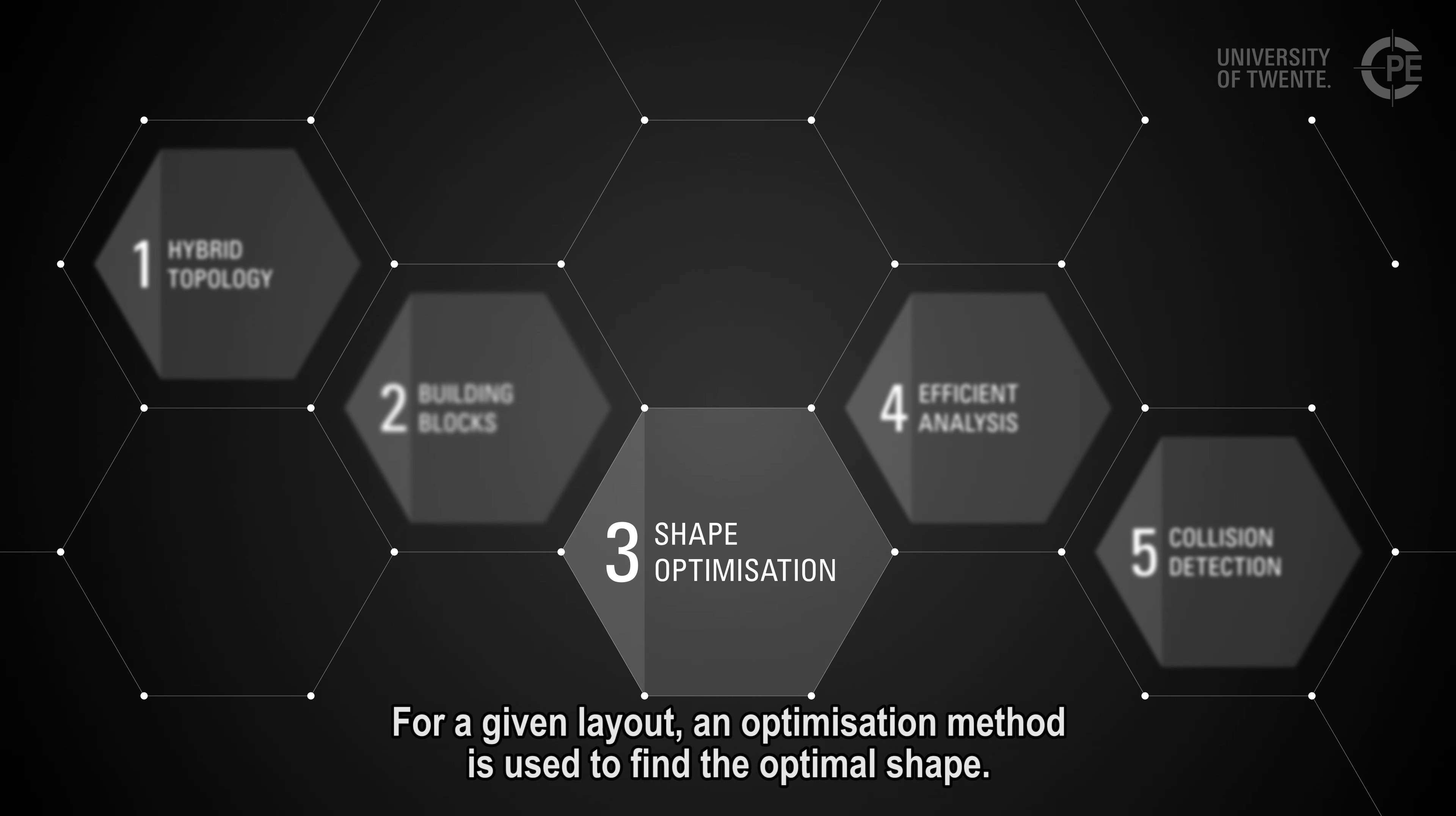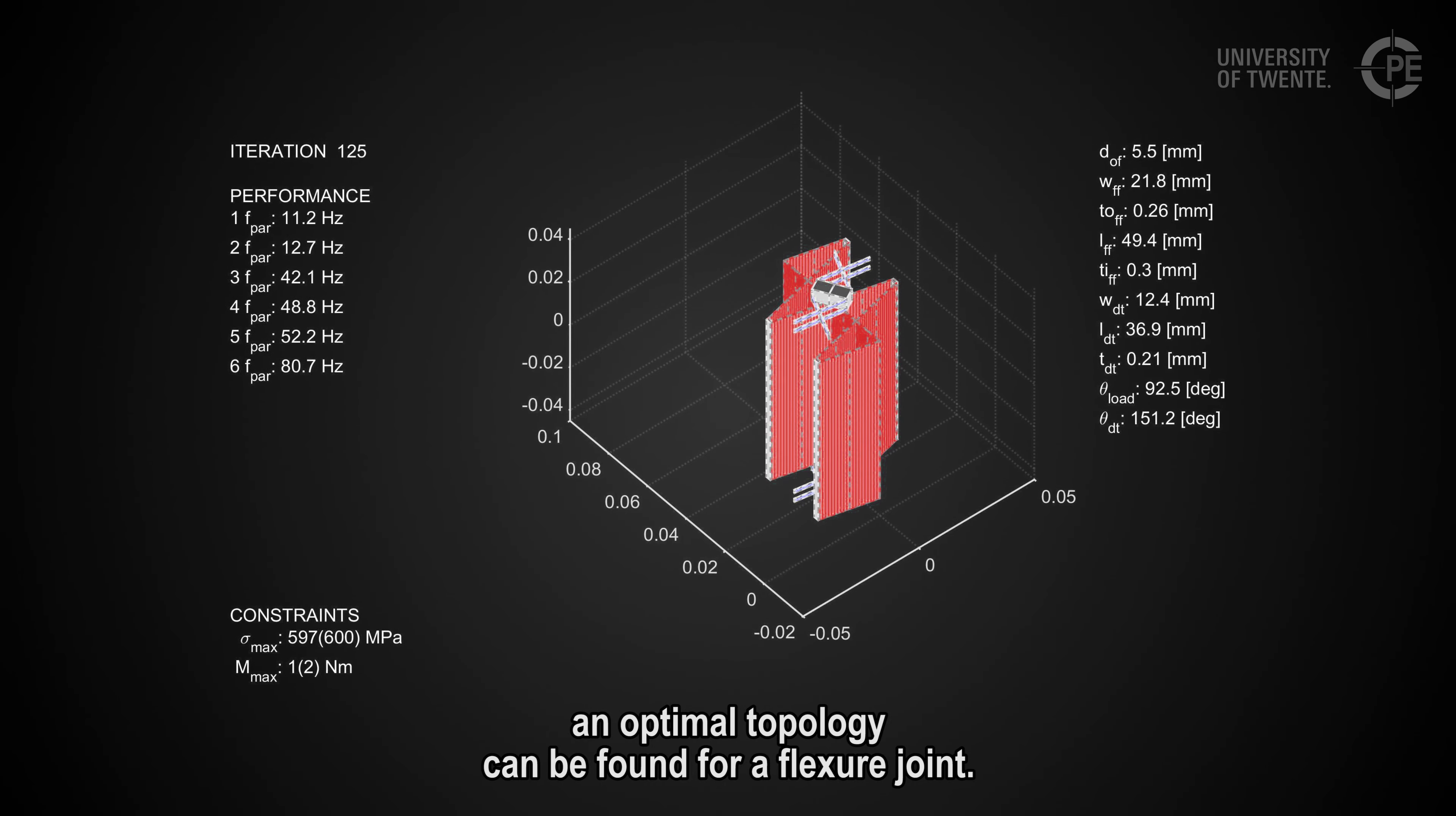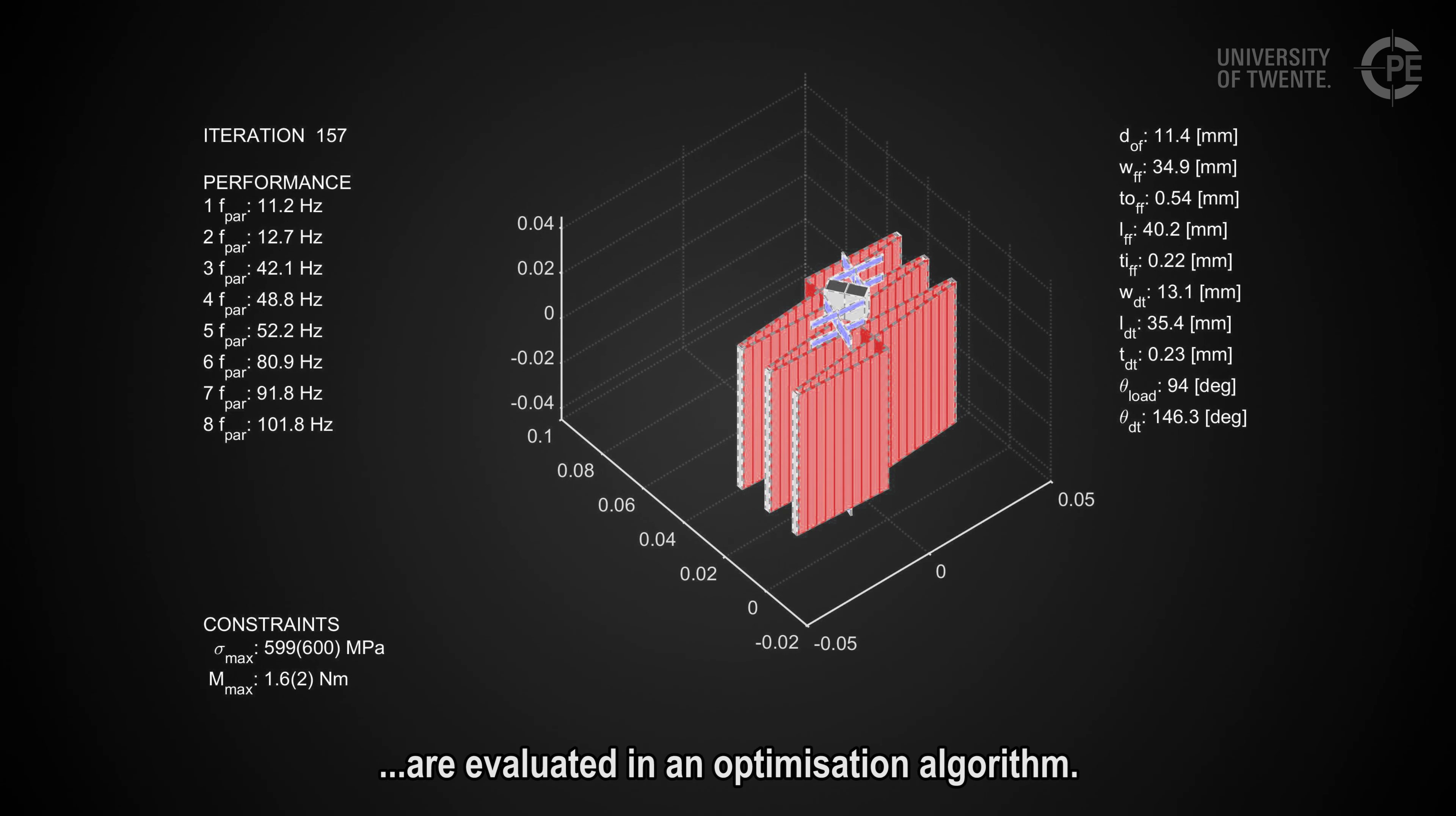For a given layout, an optimization method is used to find the optimal shape. By iteratively interchanging the building blocks and optimizing the shape, an optimal topology can be found for a flexure joint. This way, the performance of thousands of possible topologies are evaluated in an optimization algorithm.